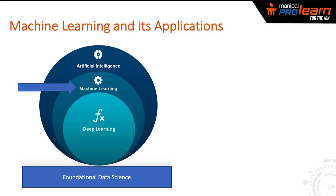Machine learning refers to empowering computer systems to learn the patterns and trends in data. It's all about making a machine learn from data so that when new data is given, it is able to predict the outcome with a certain probability. Machine learning can be broadly classified into supervised and unsupervised techniques. Supervised techniques require training data, whereas unsupervised can automatically find patterns from data without any training data.